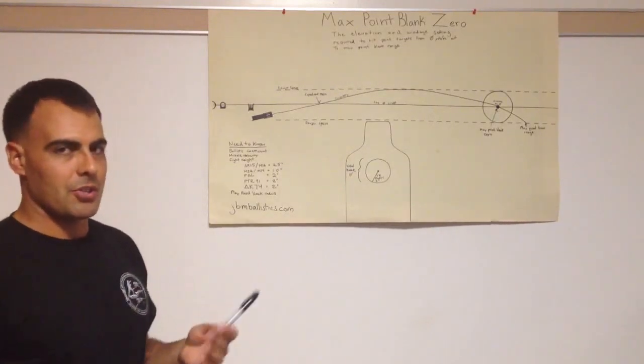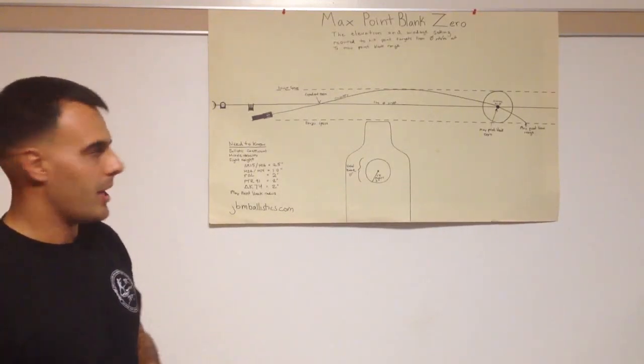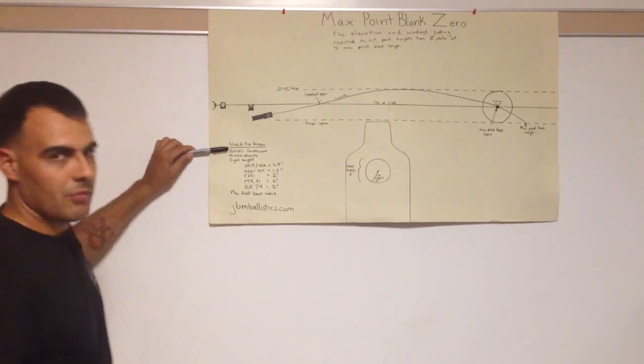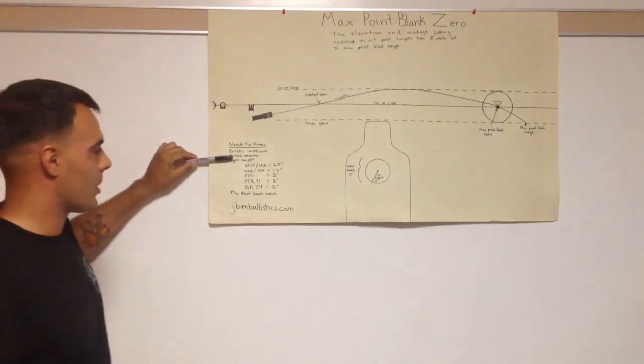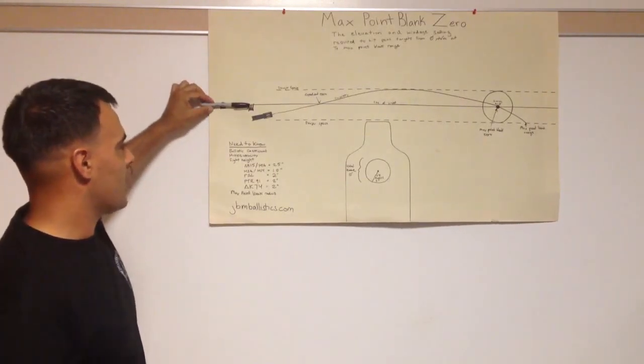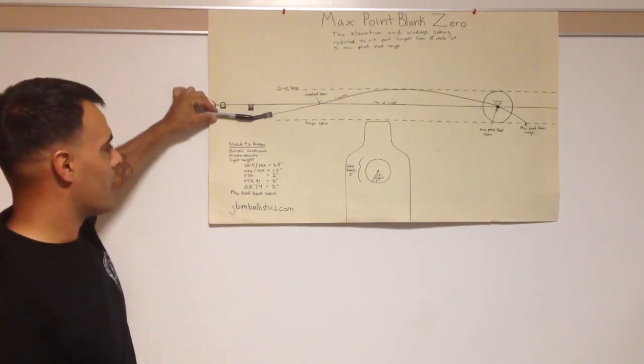What we need to know in order to find our Max Point Blank range is the ballistic coefficient of our round, the muzzle velocity, and the sight height of our gun. That's how tall our sights or our optics are above our muzzle.